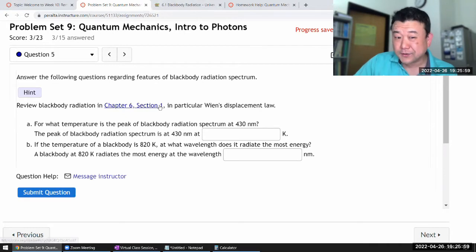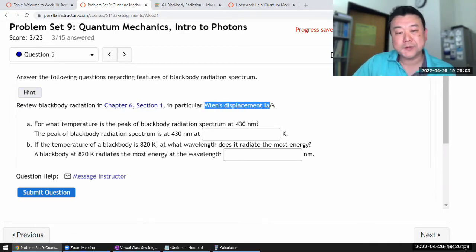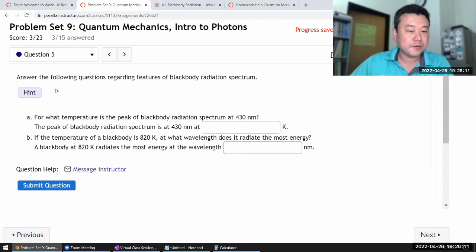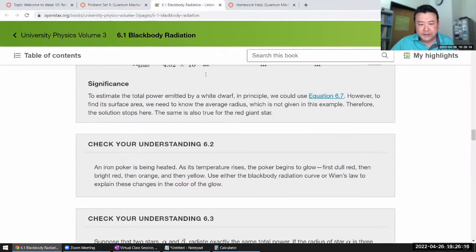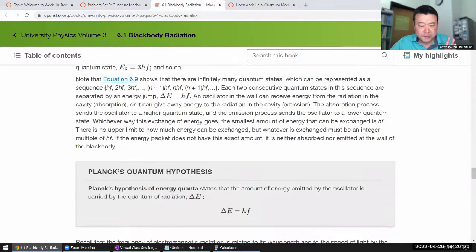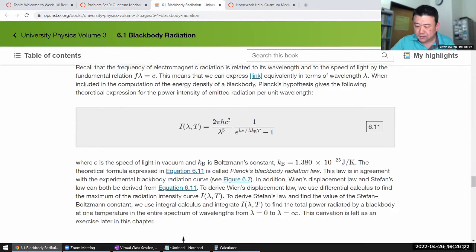The hint also has you refer to the textbook for Wien's displacement law. I think it was an Austrian guy, that's why I'm saying Wien—that's the correct pronunciation, not Win. So Wien's displacement law, let me look it up and write it down on the side so that I have access to the constants.